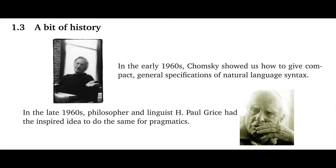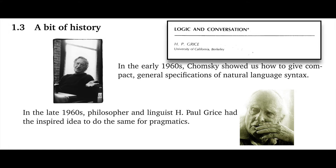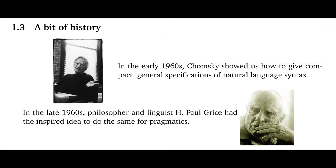Let's turn now to section 1.3, a bit of history. Our associated reading is of course Grice's Logic and Conversation. The paper is not an especially easy one to read, and some of the difficulties are the result, perhaps pretty predictably, of the fact that the context in which the paper was produced is really important. So these historical notes might help situate you a bit as a reader. First, a connection with Chomsky. In the early 1960s, Chomsky showed us how to give compact, general specifications of natural language syntax.